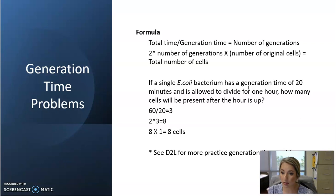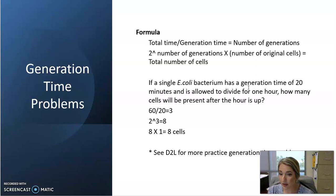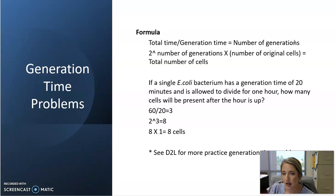Once we have that information, we use our formula. Take the total time — often given in hours, converted to minutes — and divide by the generation time. That gives us the number of generations, meaning how many times the cells can divide within that time range. Then we continue with the formula to figure out how many cells will actually exist.